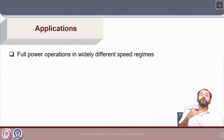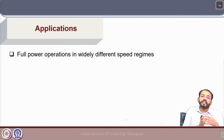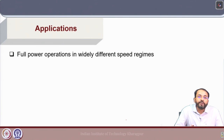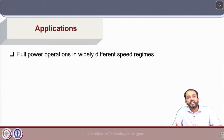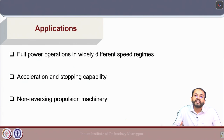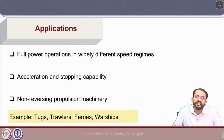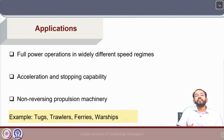Based on these advantages and disadvantages, controllable pitch propellers have specific applications where the advantages are most crucial. The main applications are for ships where full power operation can be utilized at different speed regimes, acceleration and stopping capability is important, reversed thrust requirement is high, astern performance requirement is high, and non-reversing propulsion machinery can be utilized. Examples include tugs, trawlers, ferries, and warships where controllable pitch propellers are widely used.